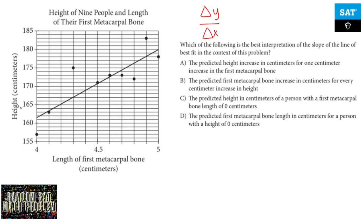The y values are your height in centimeters. Your x values are your length of first metacarpal bone. So basically for every centimeter in your metacarpal bone, you have a certain amount of height that you're expected to be.